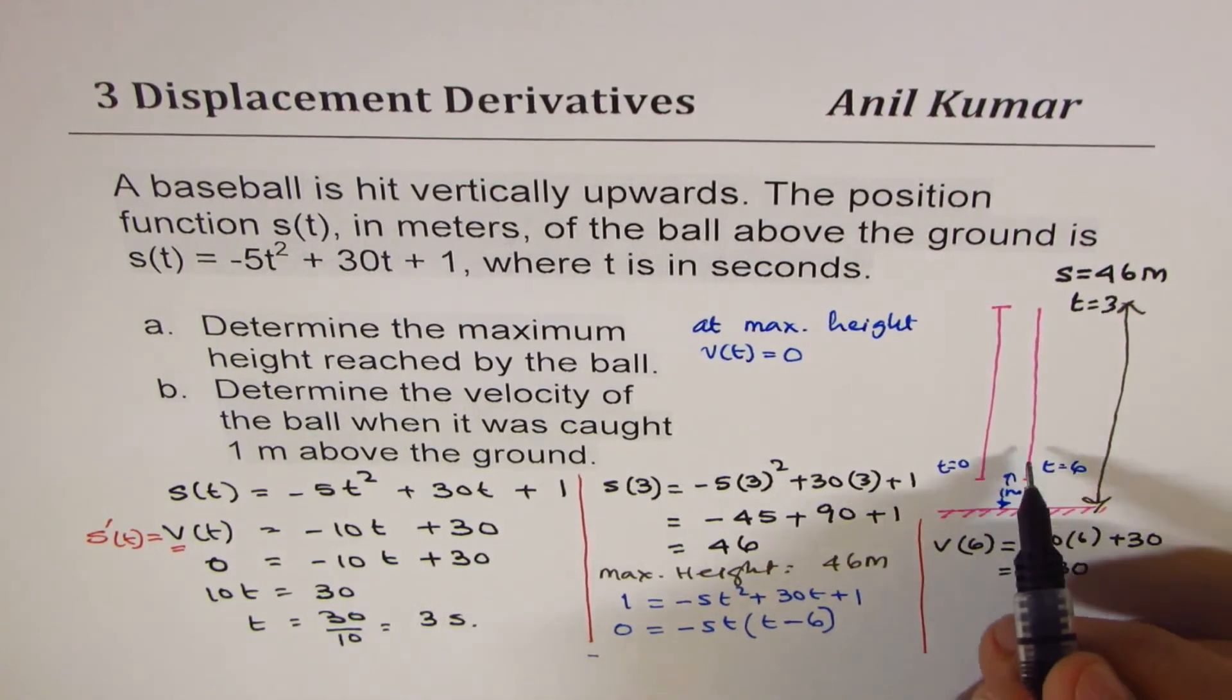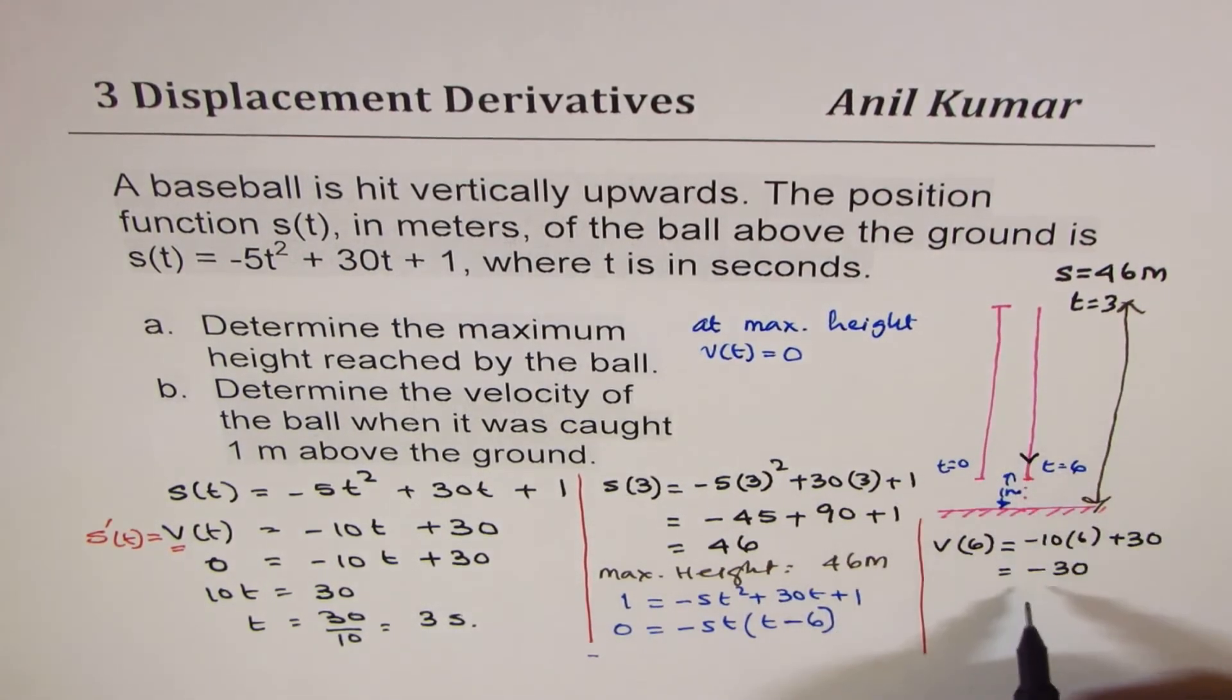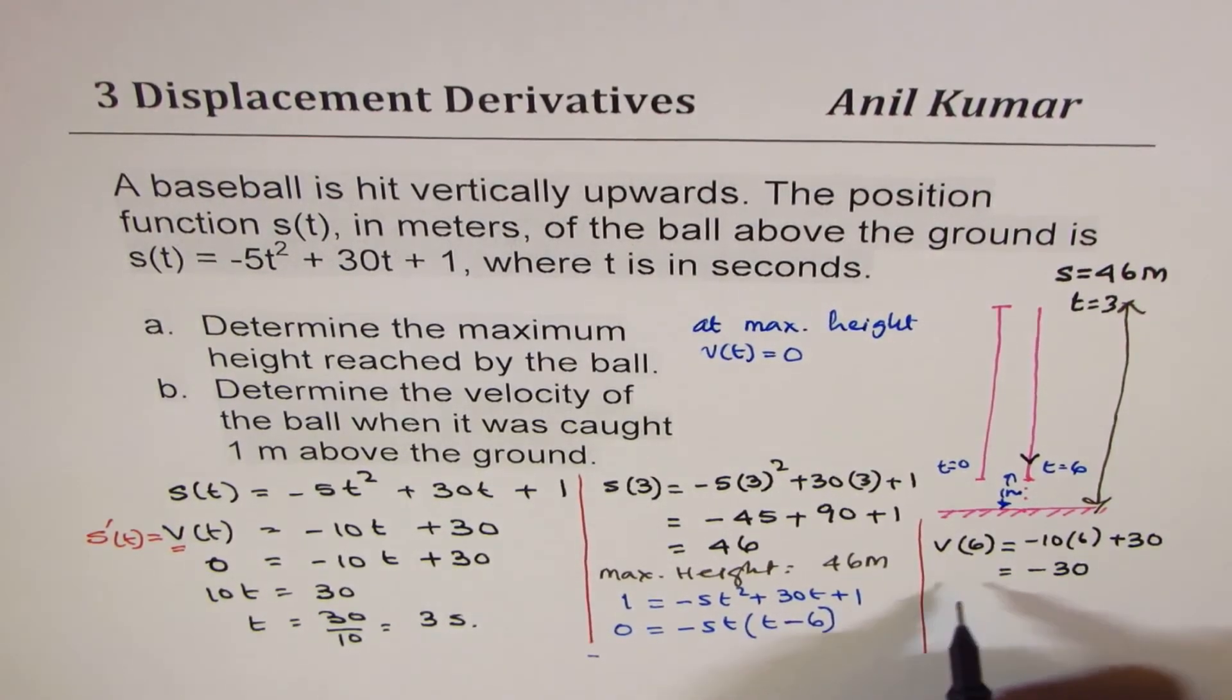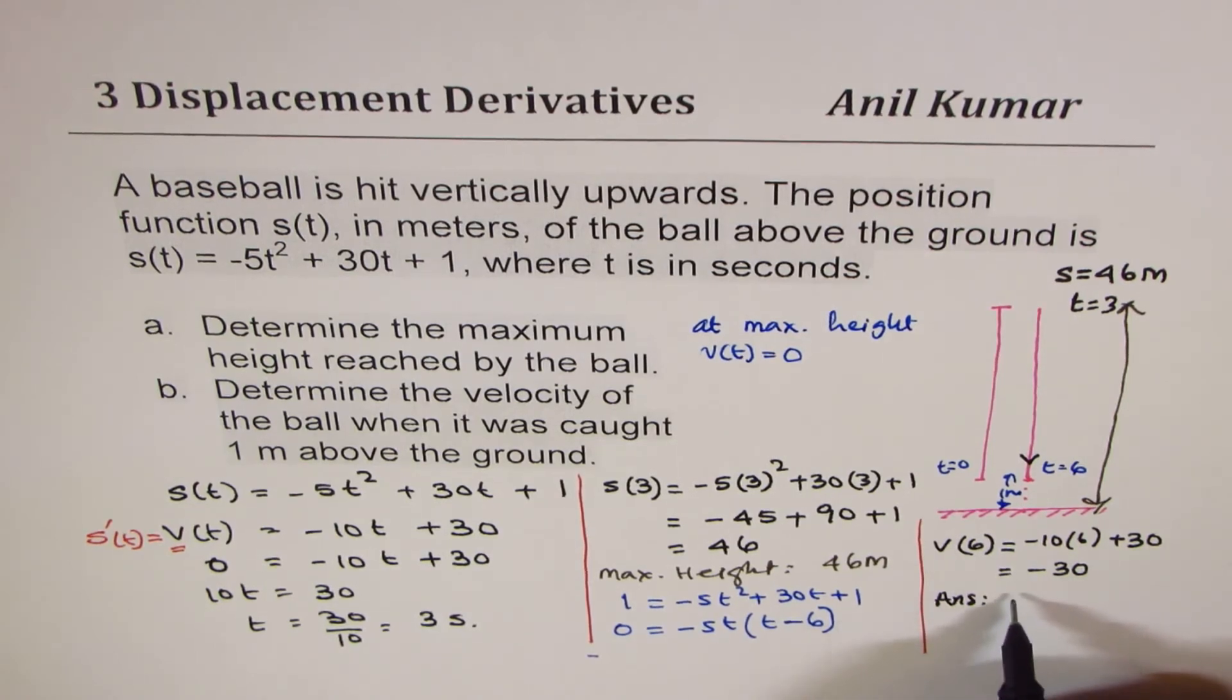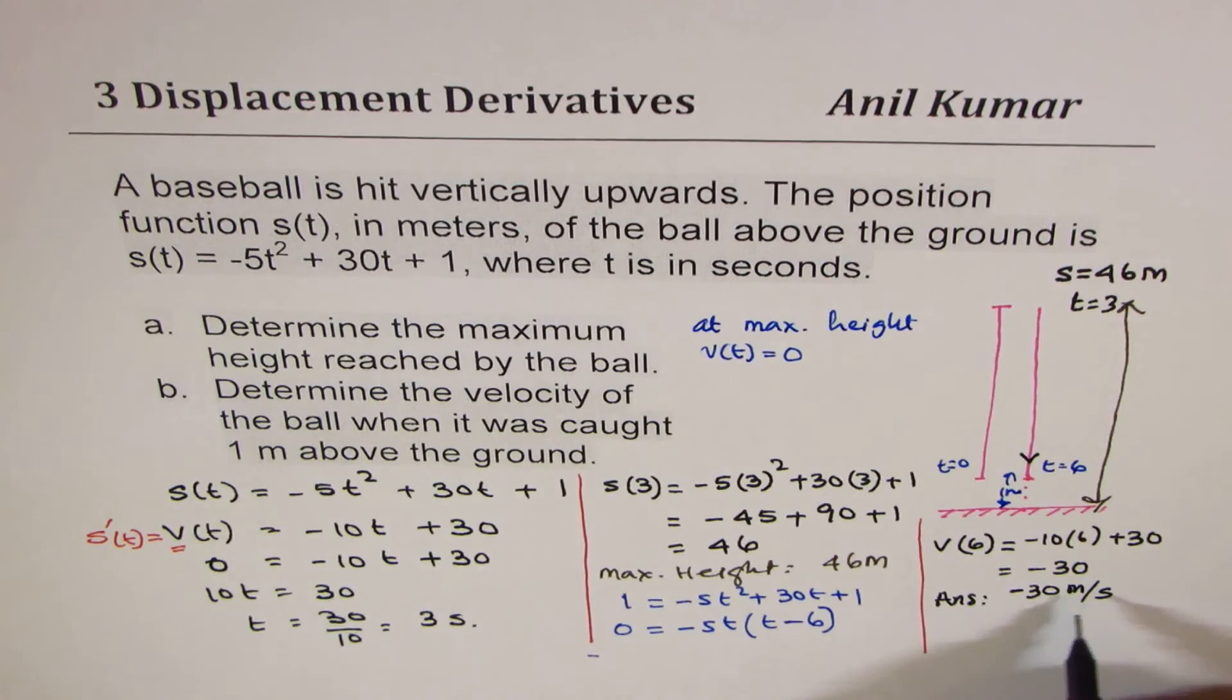Minus means it is coming downwards. Downward movement is shown by minus. So the velocity is -30 meters per second, or you can say 30 meters per second downwards.